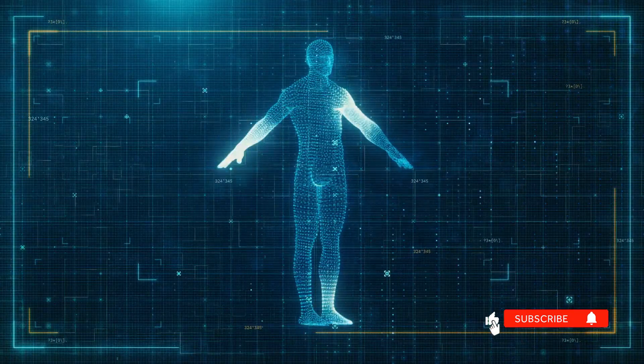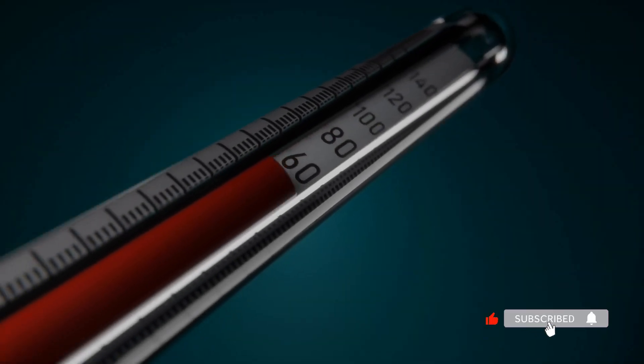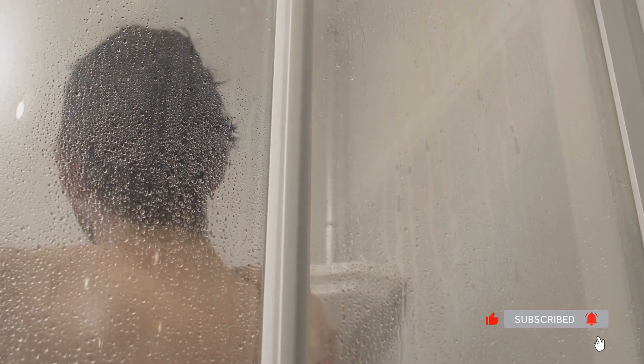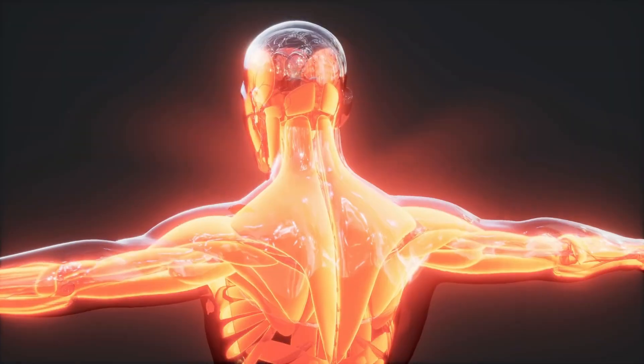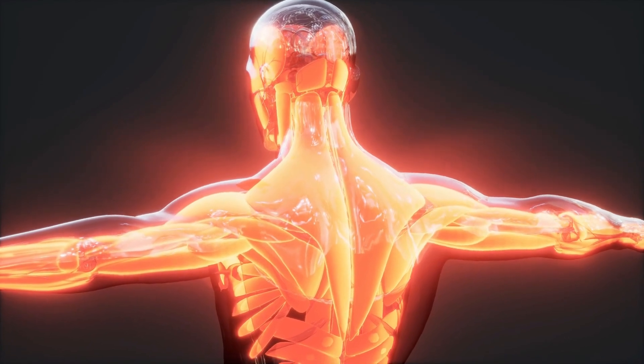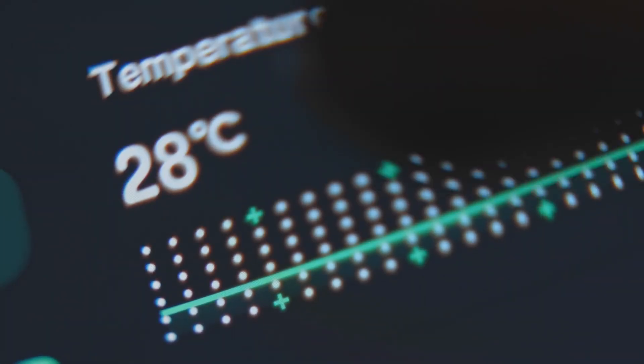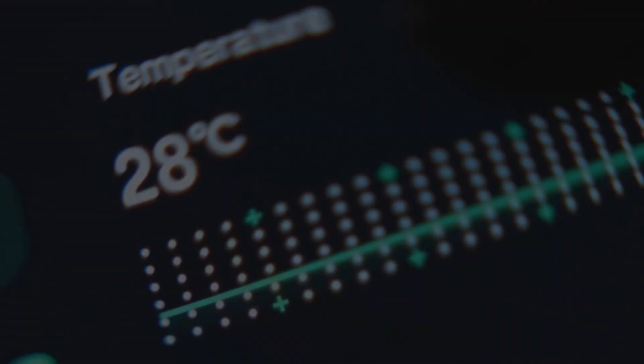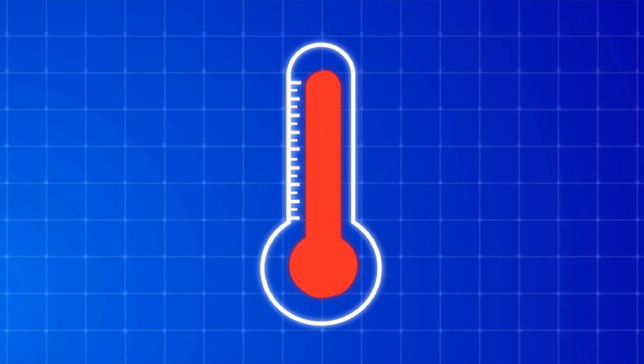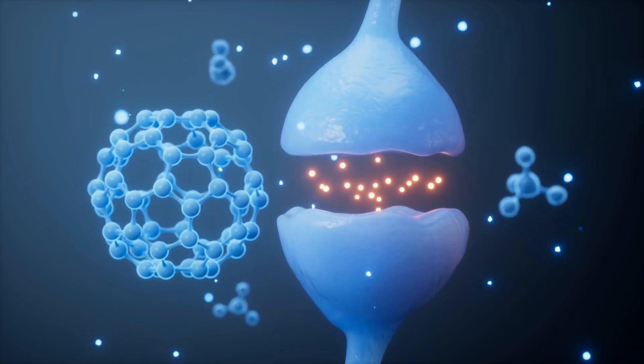Your core body temperature needs to drop by about 2 to 3 degrees to initiate sleep. When you take a hot shower, your body responds by dilating blood vessels and radiating heat away from your core. This creates a rapid temperature drop afterward. This temperature change is a powerful signal that triggers melatonin release.